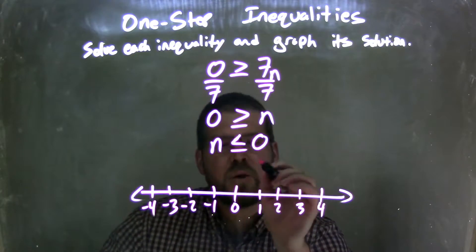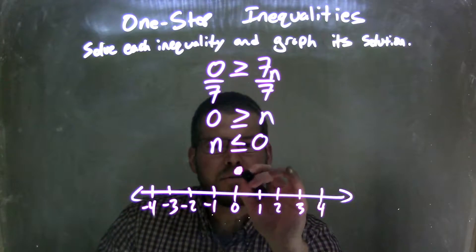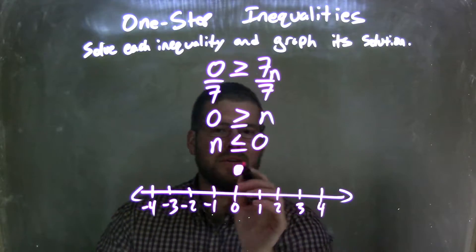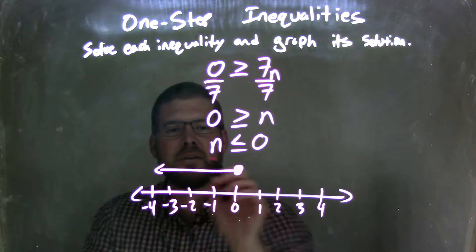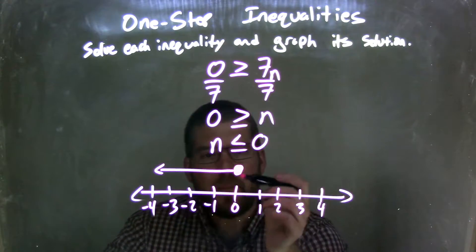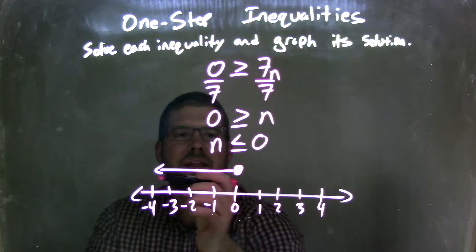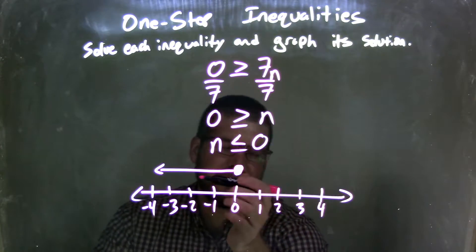Well, if I'm going to, n can equal 0, so that means I'm going to put a closed circle right there. And then n is less than also 0, so I'm going to make my arrow to the left, and now we have a graph here that represents all the values that n can be, they can be 0 as well as everything to the left, that's negative, less than 0.